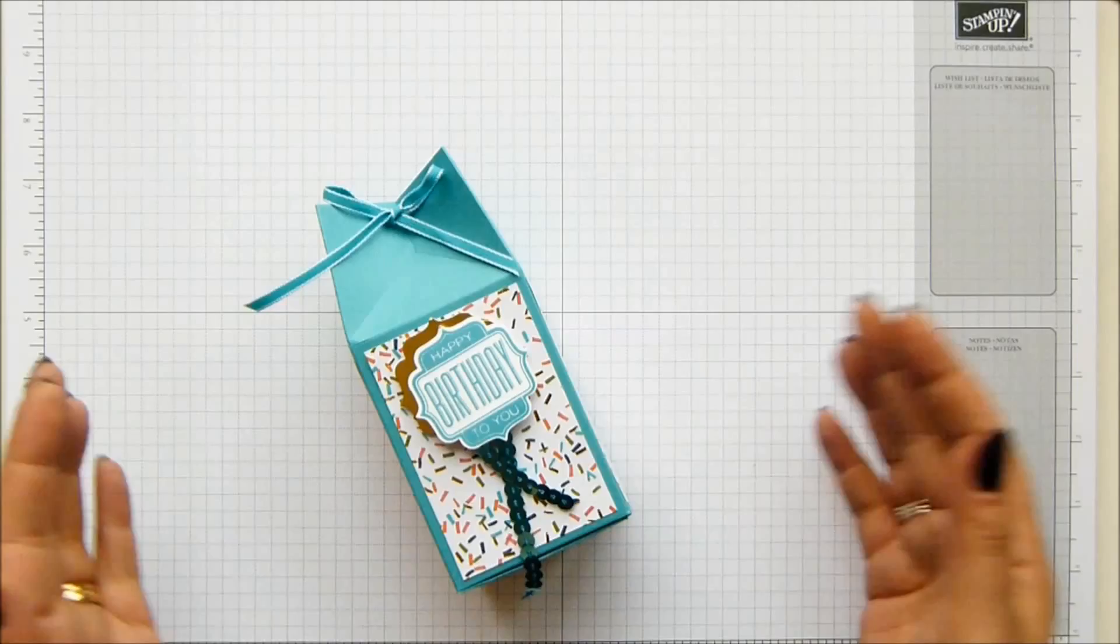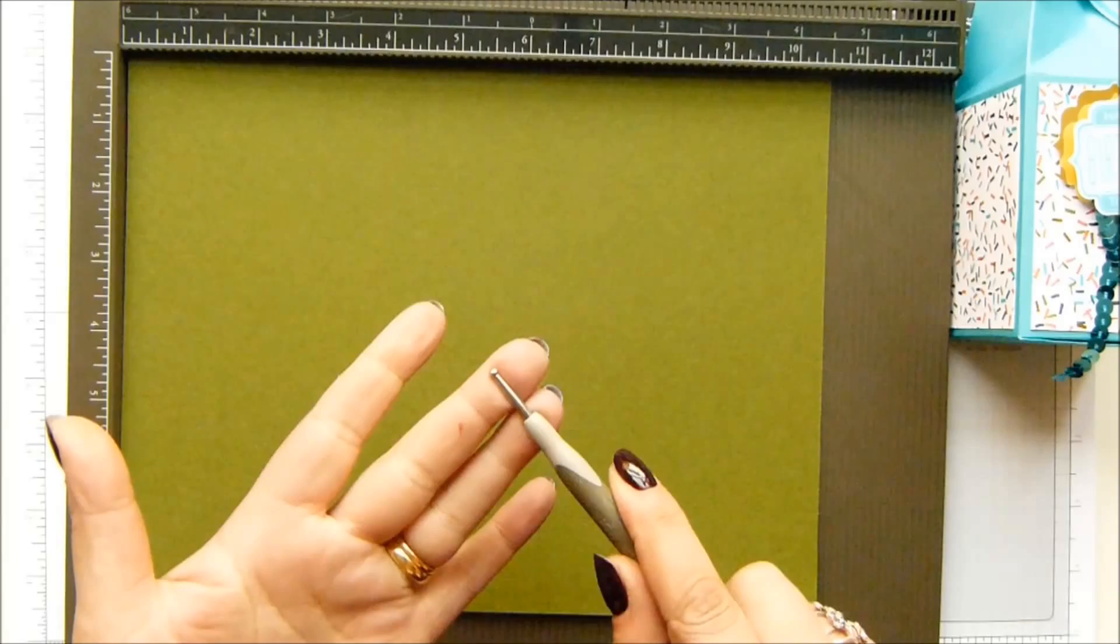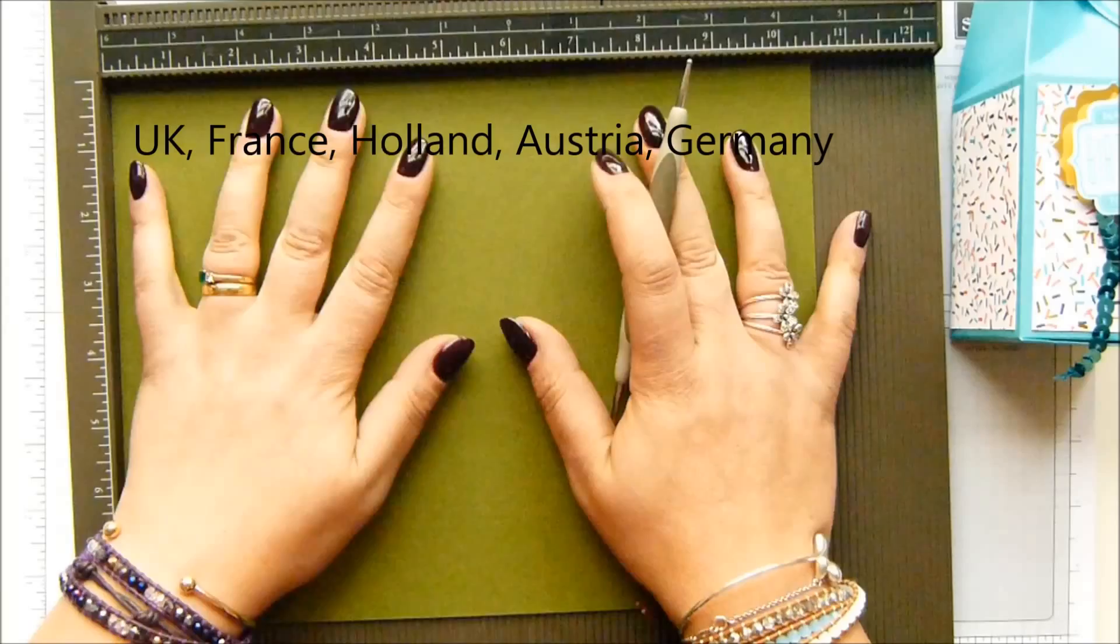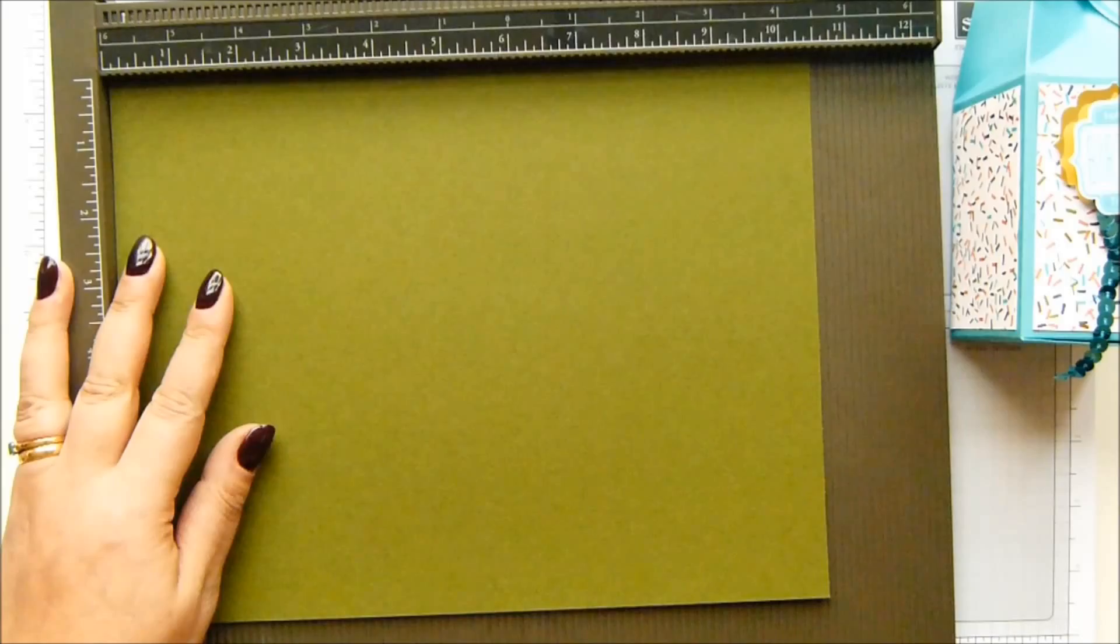You could put treats for boys. I was kind of heading in this direction with this color. I'm going to show you how to make it. You need your simply scored scoring tool. I've had lots of questions recently about where you can get these from. From me, because I am a Stampin' Up demonstrator and I sell Stampin' Up supplies here in the UK and Europe.